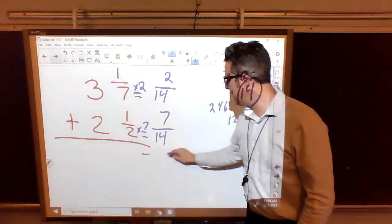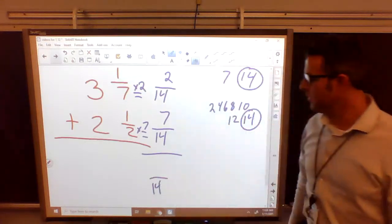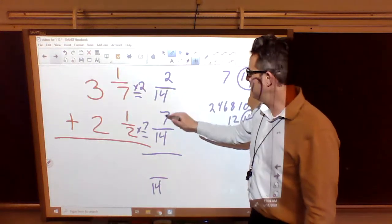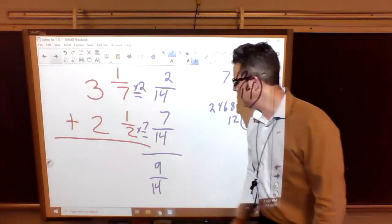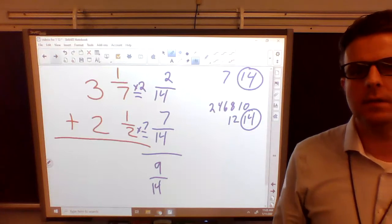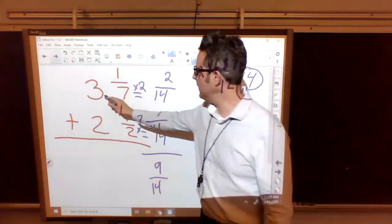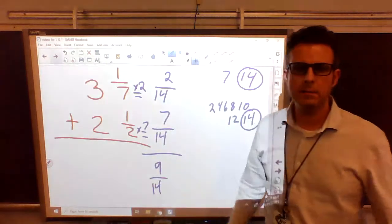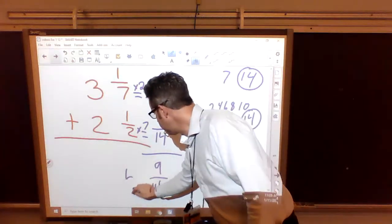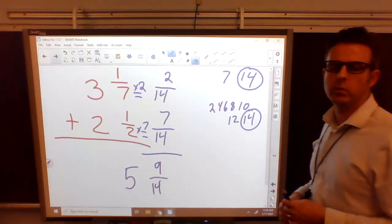Now we add 14ths plus 14ths. We're still dealing with 14ths. 2 plus 7 is 9. So our answer to the fraction side is 9/14. Now we have to look at the whole number. Our whole number, we have 3 plus 2. What's 3 plus 2? 5. So our final answer is 5 and 9/14. Nothing too hard about this one.